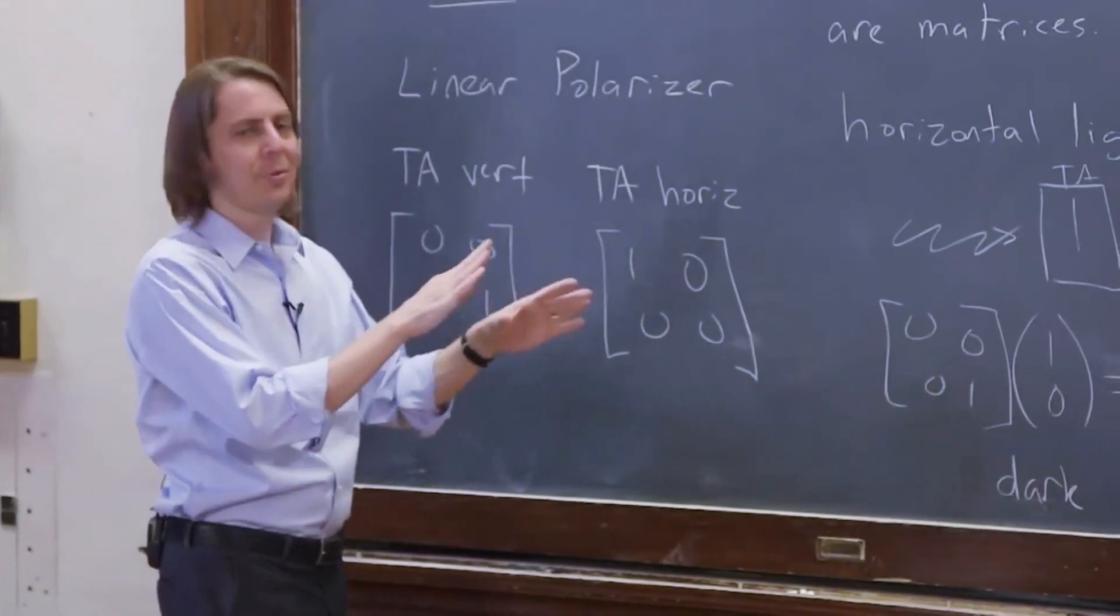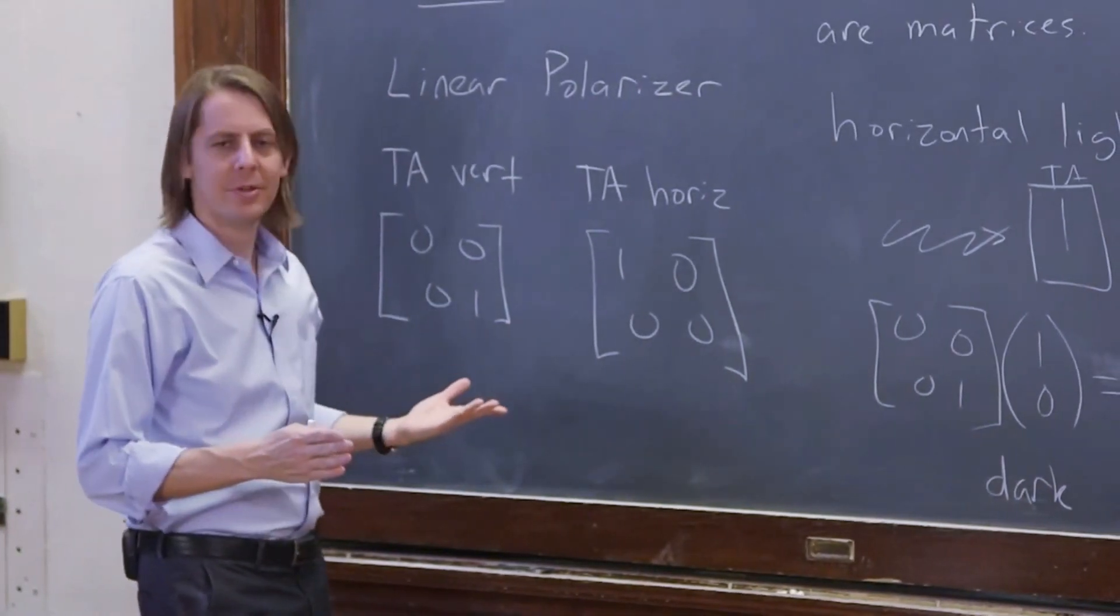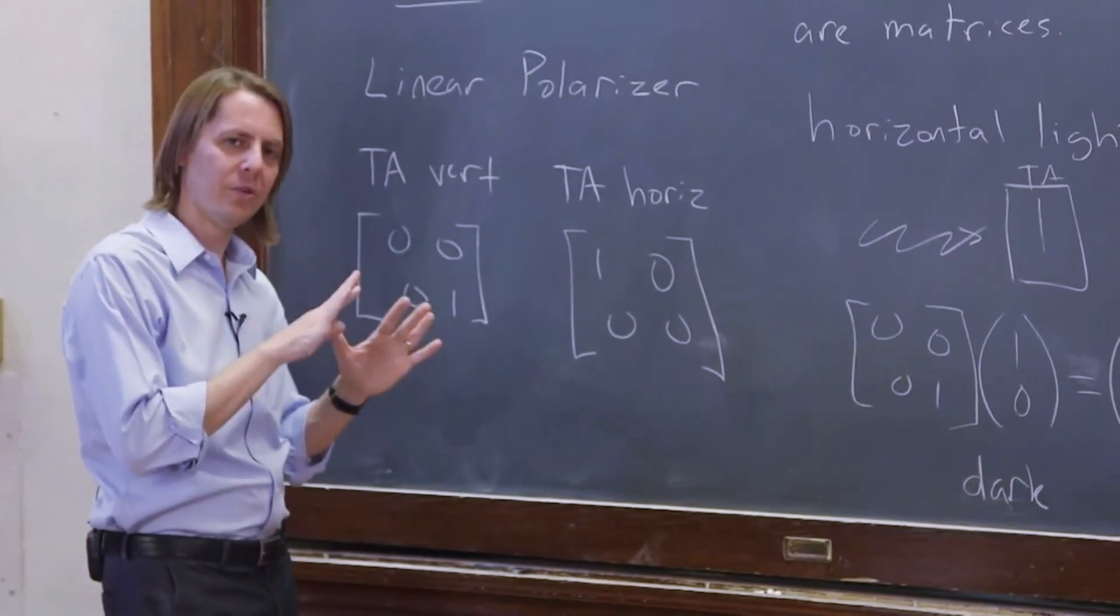That's the first simplest example of using Jones Calculus to figure out what happens in some set of light sources and polarizers.